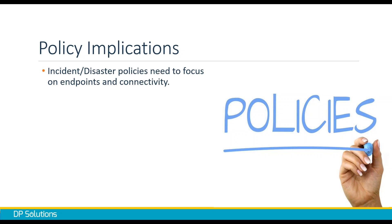Incident and disaster policies need to focus on endpoints and connectivity. In the older environment, an incident might be the server room's on fire or you've been hit with ransomware. But what if the incident is that nobody can connect to your cloud host because the provider was hacked or had an attack that brought their service down? We need a policy for what happens when the office loses power or internet connectivity — does everyone work from home? Is that secure? Should they go to a public Wi-Fi?